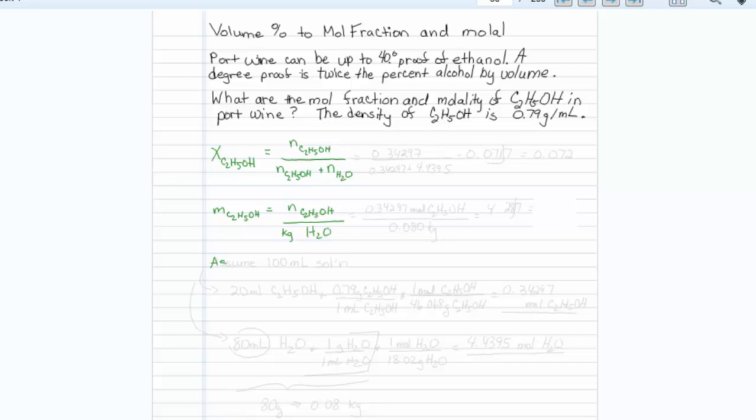The easiest thing to do is assume 100 mL of solution. This locks us into having 20 mL of ethanol, because it's one half of 40. So one half of 40 gives us 20 mL of ethanol, and we'll have 80 mL of water.